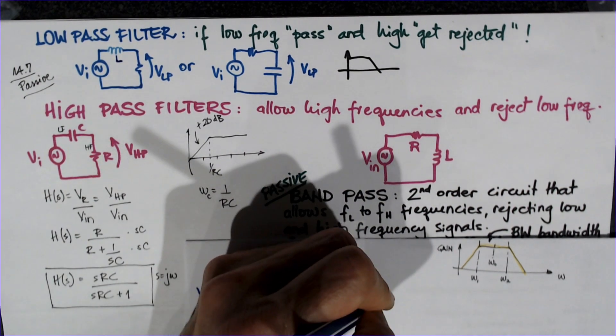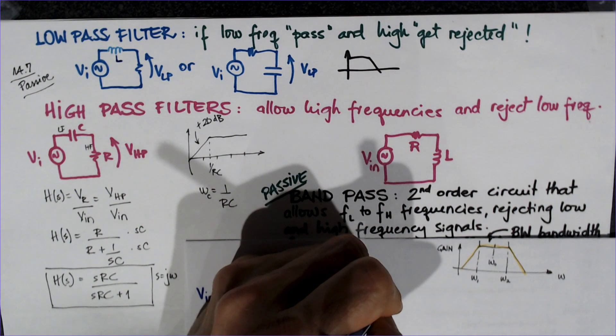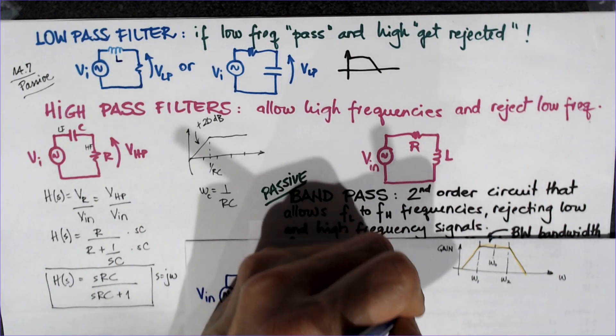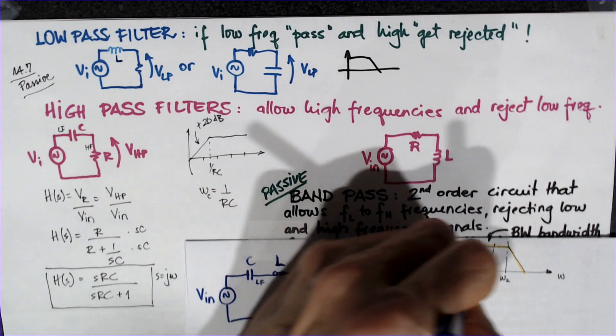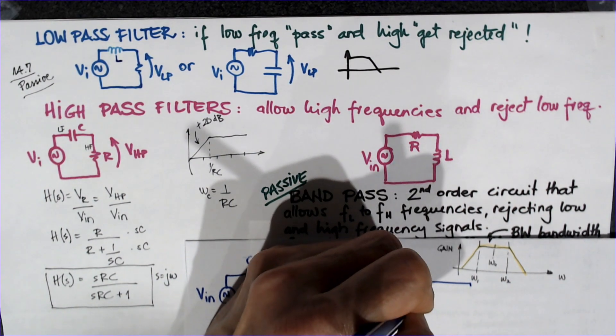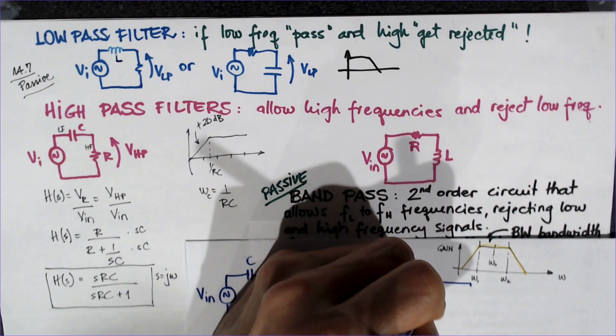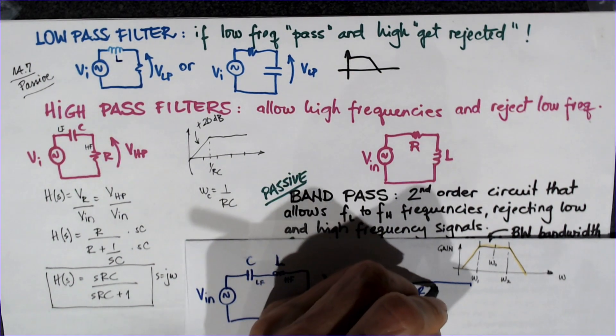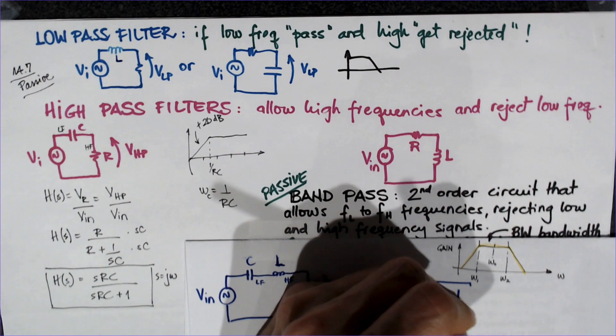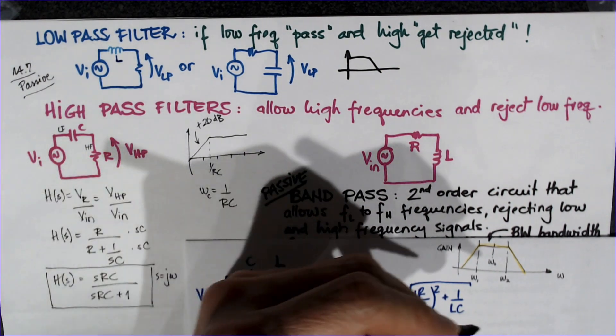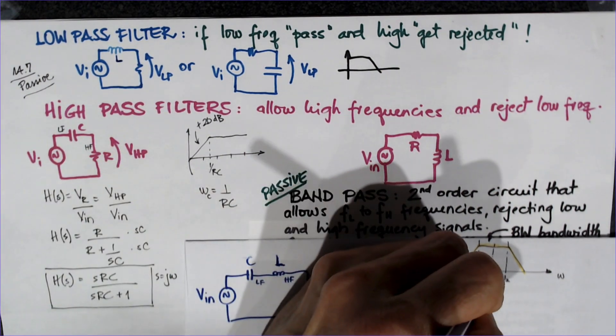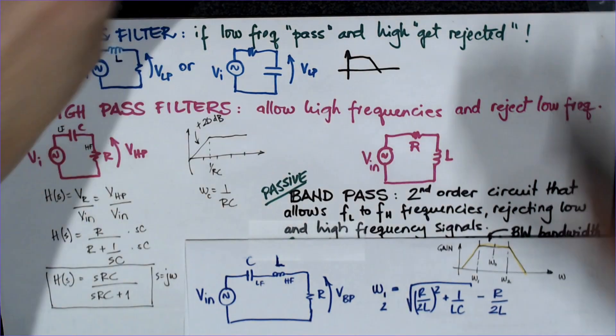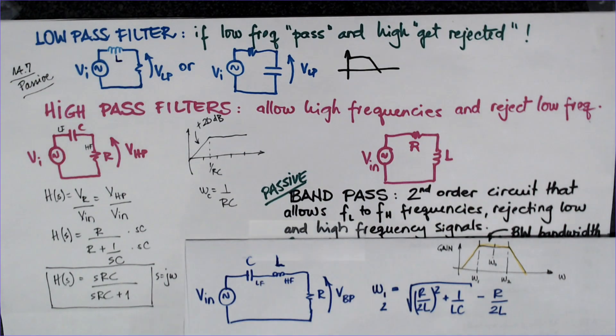So I'm gonna say Omega 1 and 2 are very similar, so I'm gonna use just one formula. It's the square root of R over 2L squared plus 1 over LC. Omega 1 is the minus R over 2L, and Omega 2 is the plus R over 2L.